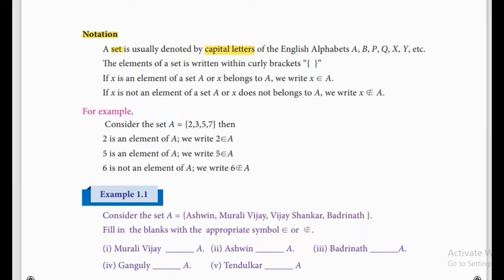We name a set with capital letters. You can use any of the 26 alphabets but it should be a capital letter. For example they are given as capital A, capital B, capital P, capital Q, capital X, capital Y, etc. Consider the set A — they are given in capital letters. We denote the set in capital letters.